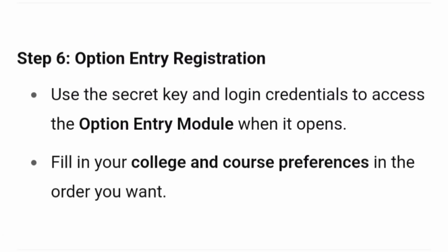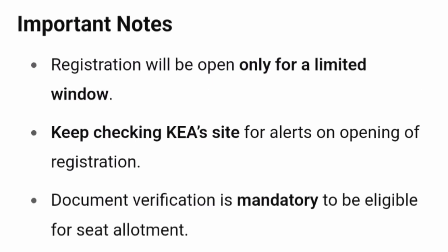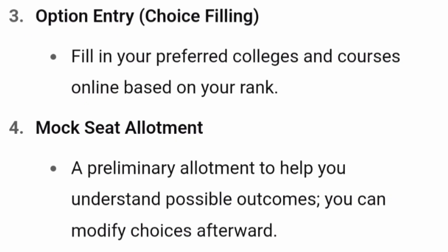The next step is option entry registration. For this you will need the secret key from document verification along with your login credentials to access the option entry module. This is where you enter all your college preferences and course preferences in order, so that you can be allotted a seat. Document verification is mandatory to be eligible for seat allotment — students who do not complete it cannot attend the counseling rounds. I will make a separate video on how to do choice filling in detail.